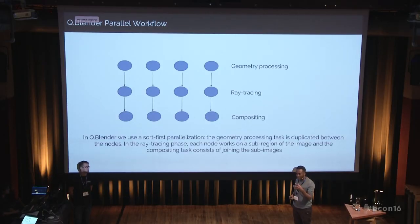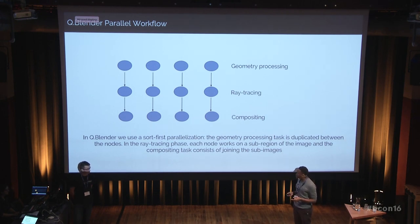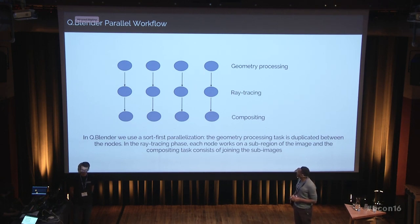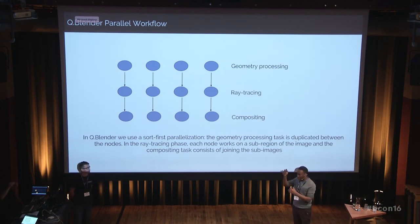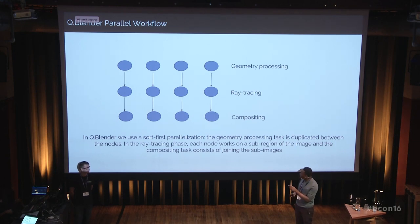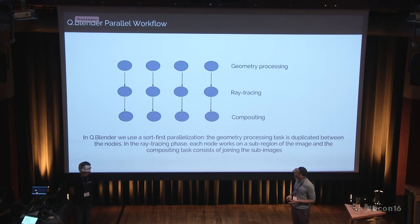In general, there are three stages. The first stage is geometry processing. We are using the Blender Cycles engine, so we are working mostly with ray tracing — but at this stage you can also do ray casting or rasterization with another engine. The last stage is compositing. These are the three main phases people distinguish when thinking about how to parallelize. Depending on how you order these tasks, you can make a sort-first, sort-middle, or sort-last parallelization. We are doing what we call sort-first parallelization.